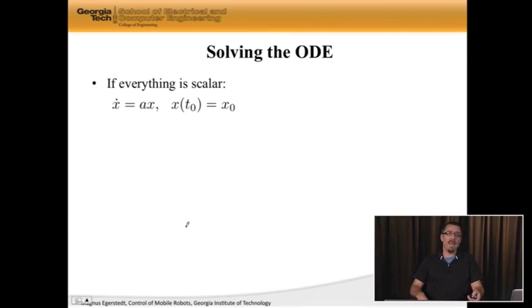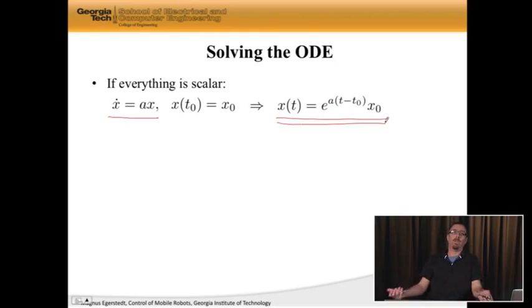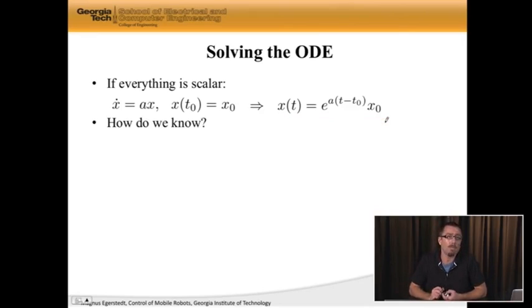So we need to solve x dot is Ax. Let's start with a scalar version of this, where x is just a number. So the scalar version, I'm going to write this x dot is little ax, and I start somewhere. Well, you may not know this, but if you've taken or seen differential equations, the solution to this differential equation is actually given by x of t is e to the a, t minus t naught times x naught. So here, the professor shows up and says, oh, this is the solution to this differential equation. Now you clearly are critical thinking people who don't just accept anything the professor says. So what you want to do now is make sure that this is indeed correct.